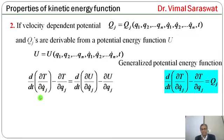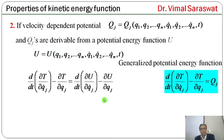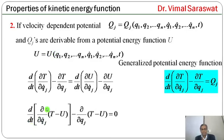In this case, Lagrange's equation becomes: d/dt(∂T/∂qj_dot) - ∂T/∂qj = d/dt(∂U/∂qj_dot) - ∂U/∂qj, where J runs from 1 to n.